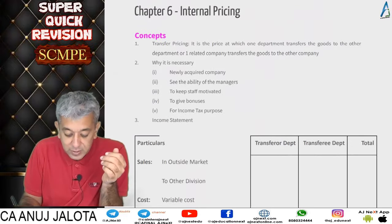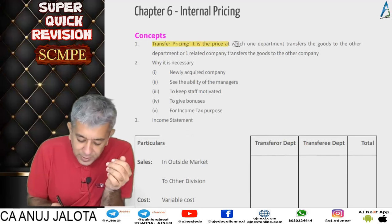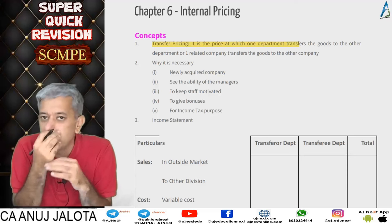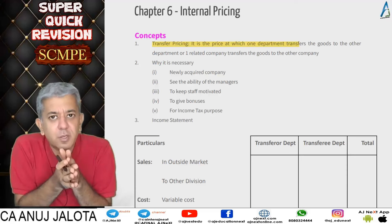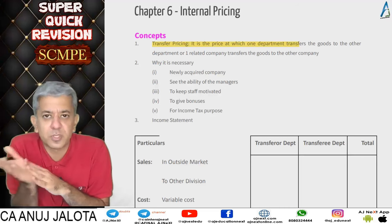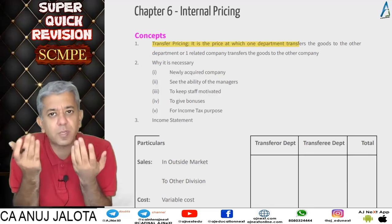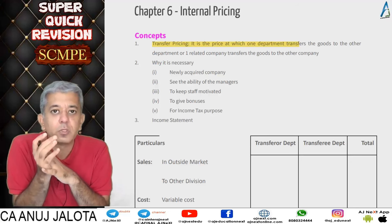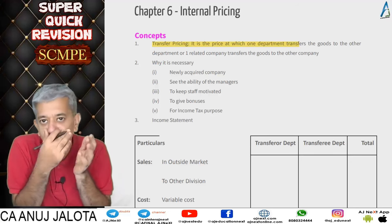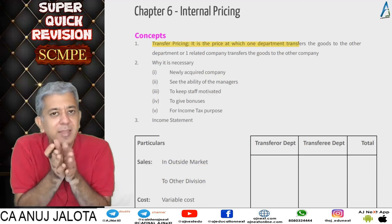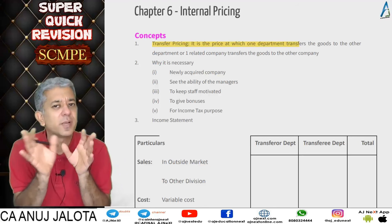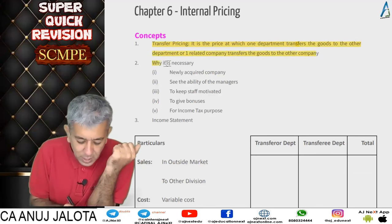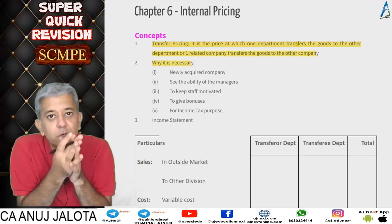Transfer pricing is the price at which one department transfers goods to the next department. Like in CA Inter, process one transfers to process two — not at cost but at cost plus markup. Or one related company transfers goods to another related company, like a holding company transferring to a subsidiary. Transfer price is the internal price between two departments or two related companies.